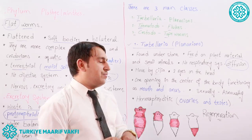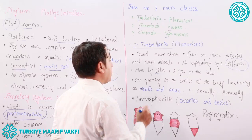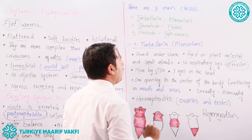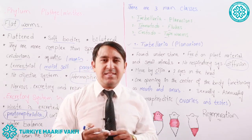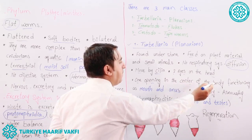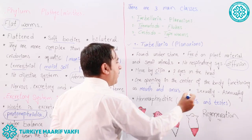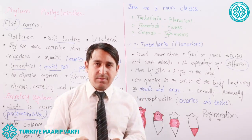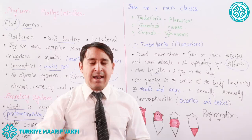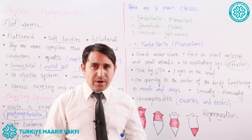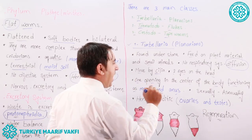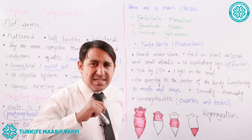Planarians have two eyes on their head, and one opening in the center of their body. This opening functions as both mouth and anus — just one opening from which they eat and also remove digestive waste products. So they have just one opening that functions as both mouth and anus.